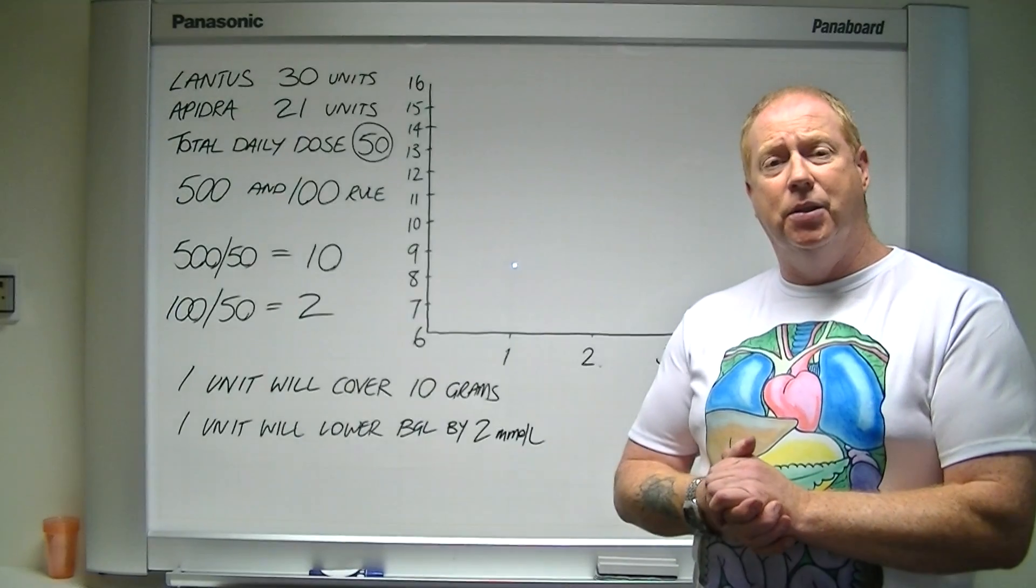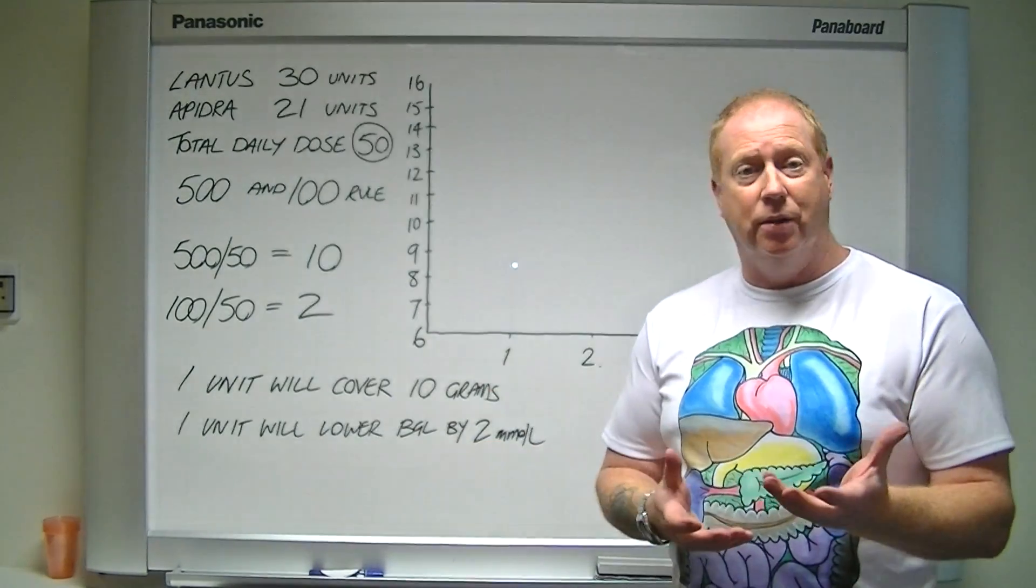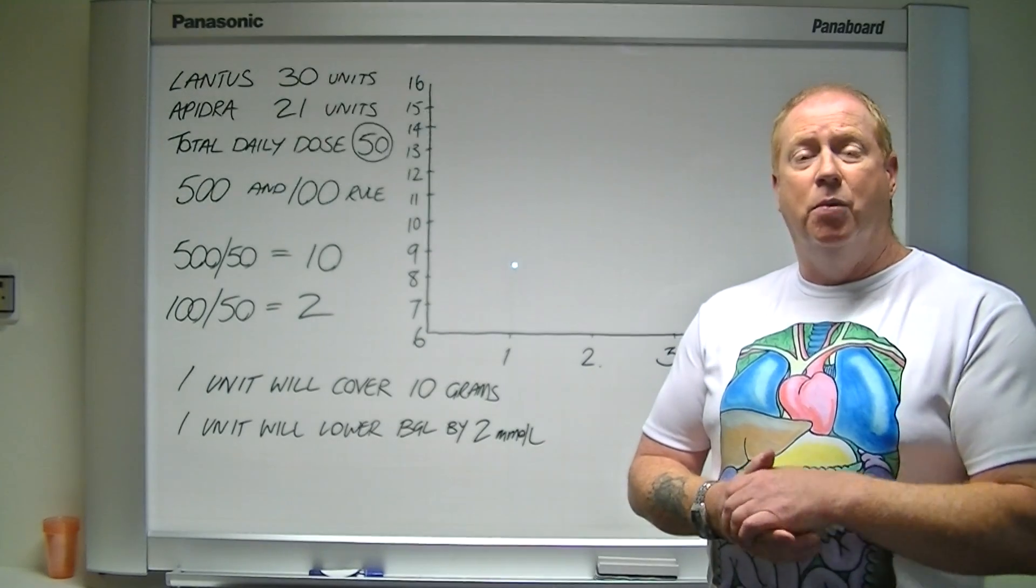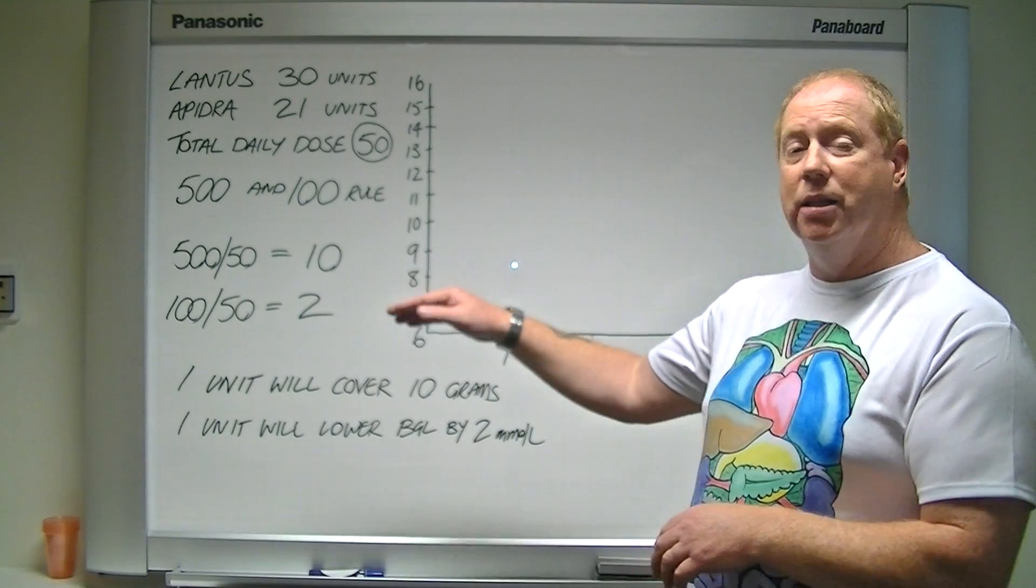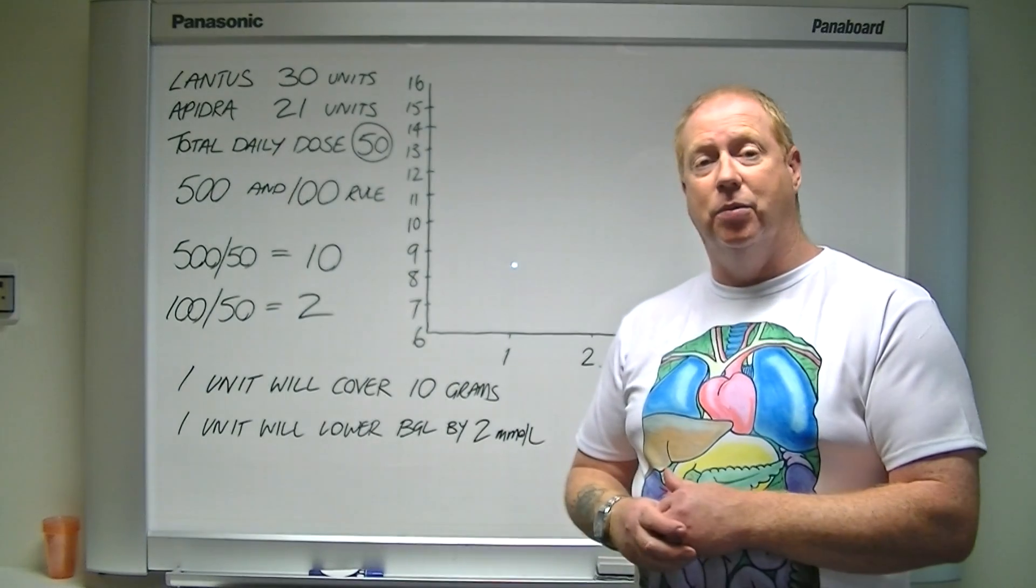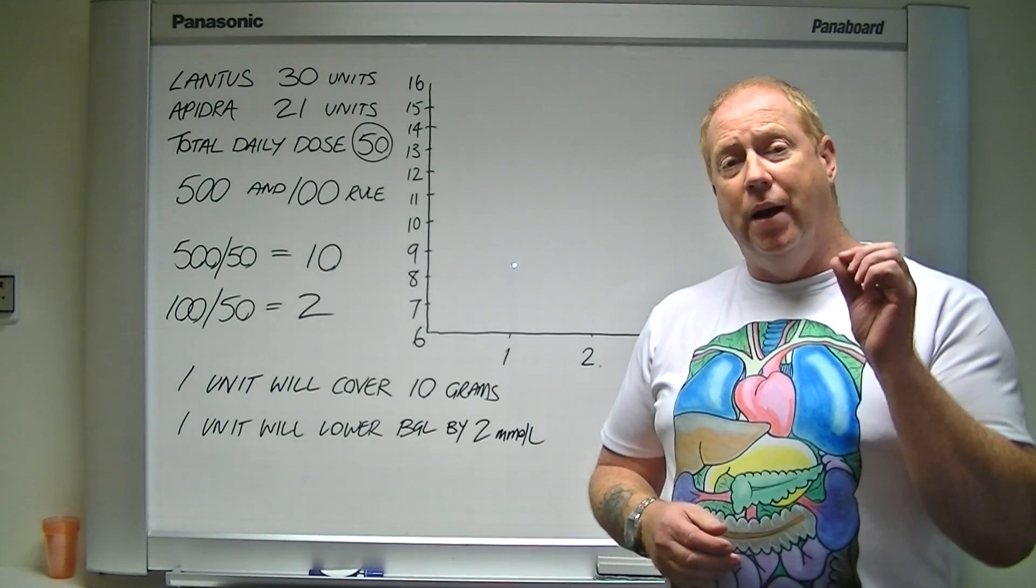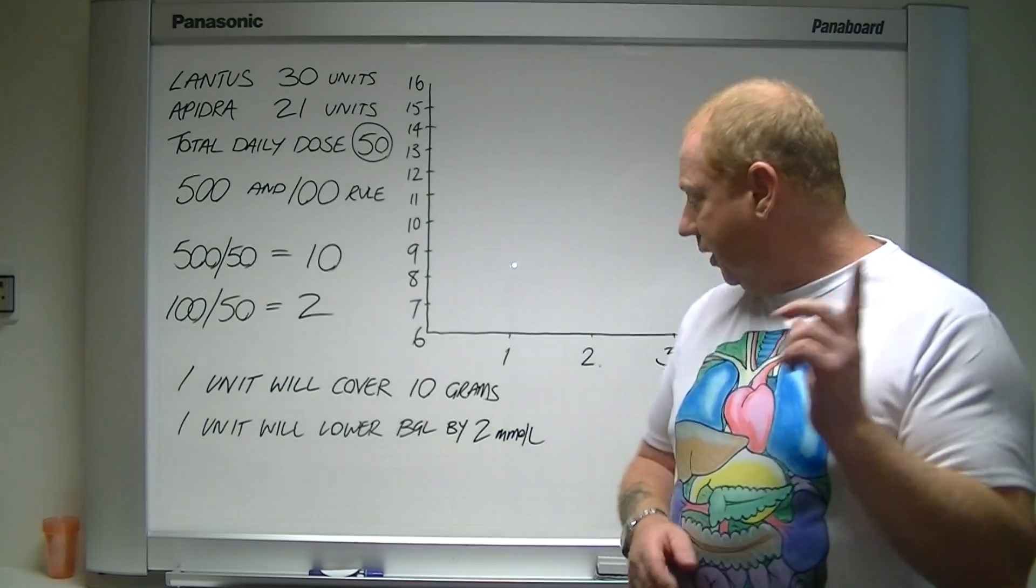However, if my sugar level is quite high before lunch or before breakfast or dinner, then I want to have a correction bolus. So what I've done is I've calculated my insulin sensitivity factor, which is the 100 rule, 100 divided by 50 equals 2. In other words, I now know that one unit will lower me 2 millimoles.